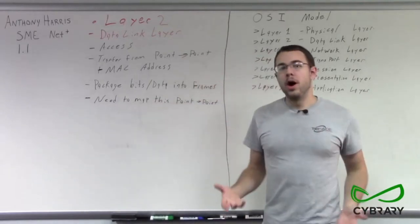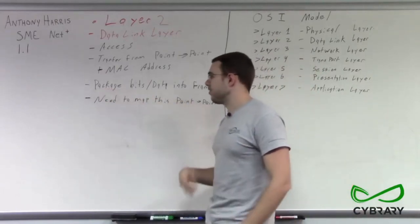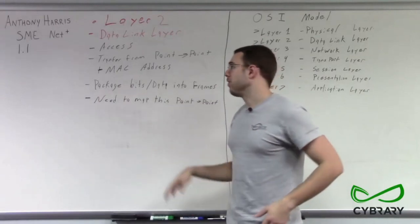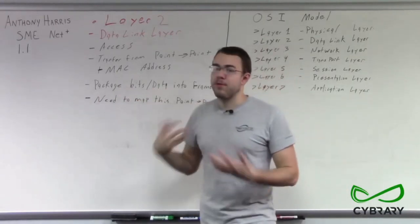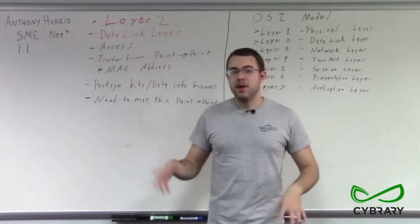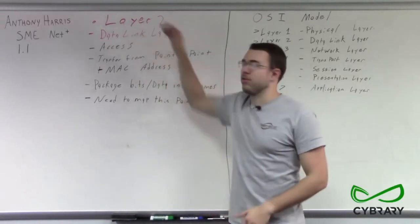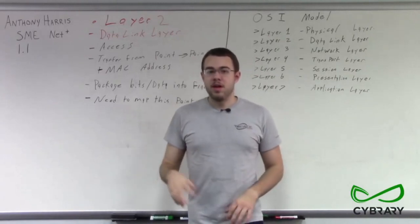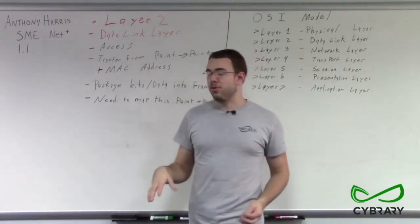Whereas our layer one was a physical layer, our layer two is going to package those physical bits, those physical impulses, and package them into data and into frames. When we're talking about frames, we're essentially thinking of segments of data that we're pushing over a layer two connectivity. So when we think layer two, we're thinking of frames, and we'll talk about a different term when we get to layer three.